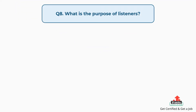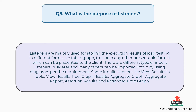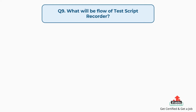Question 8: What is the purpose of listeners? Listeners are majorly used for storing execution results of load testing in different forms like table, graph, tree, or other presentable formats for the client. There are different types of inbuilt listeners in JMeter, and many others can be imported using plugins. Some inbuilt listeners include: View Results in Table, View Results Tree, Graph Results, Aggregate Graph, Aggregate Report, Assertion Results, and Response Time Graph.